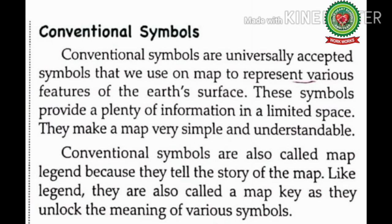The various symbols used to show features of the earth on a map are called conventional symbols. They are important because these symbols are used to depict features like cities, roads, railways, water bodies, etc. In simple words, a map is a useless tool without symbols. Conventional symbols are universally accepted, meaning these symbols are the same in every country — even we can read maps in foreign languages with the help of these symbols.